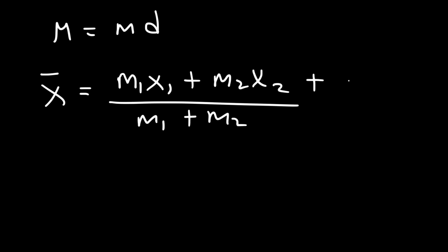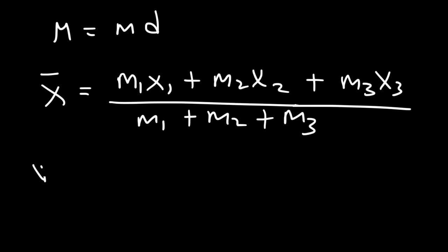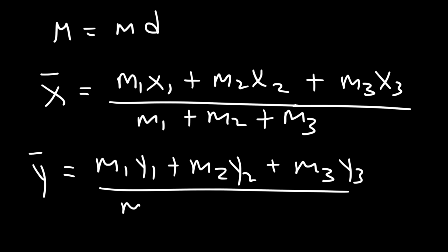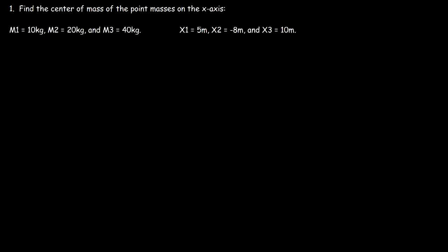Keep this in mind: the moment of an object is simply the mass times the distance from the axis of rotation. The center of mass along the x-axis is the total moment divided by the total mass. If you have three objects, you can continue this equation. If you need the y-coordinate for a two-dimensional system, you use a similar equation.